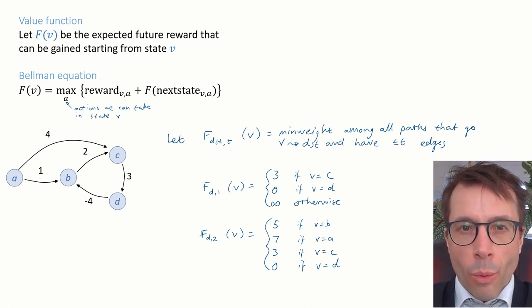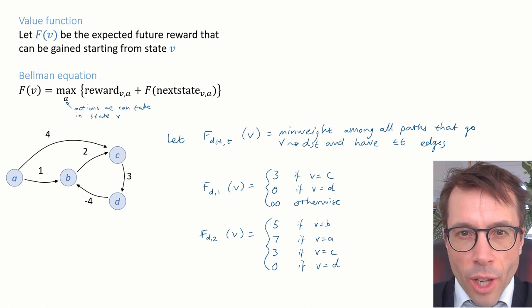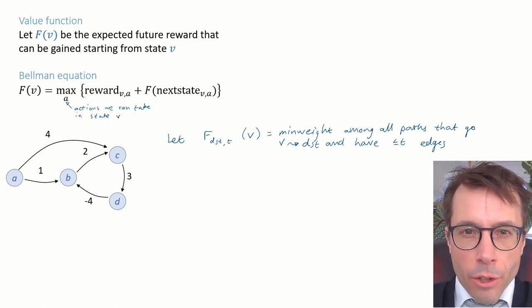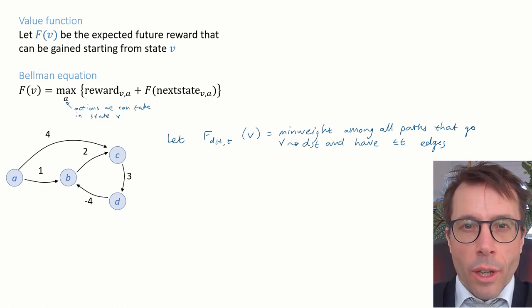Now for the magic where our brain flips and we start to think of this as a game where we choose actions. Let's go back to the definition of f and let's think about it as a choice problem.